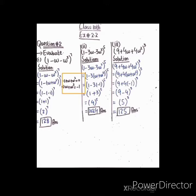Next question: (1 - 3ω - 3ω²)^5۔ bracket کے اندر -3ω اور -3ω² میں سے -3 common لیں، اندر رہے گا (ω + ω²)۔ اسی property کے تحت ω + ω² کی جگہ -1 put کریں۔ -3 × -1 = +3۔ 3 + 1 = 4، اور power five ہے، تو 4^5 کیا ہوتا ہے؟